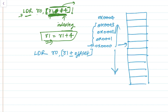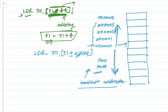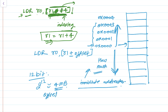You might ask: how far can it go in the backward or forward direction? This is related to the immediate value. In immediate addressing, the offset is defined by 12 bits, which gives 2 to the power of 12, equal to 4 MB. So the offset can reach up to 4 MB in either direction while decoding the offset.